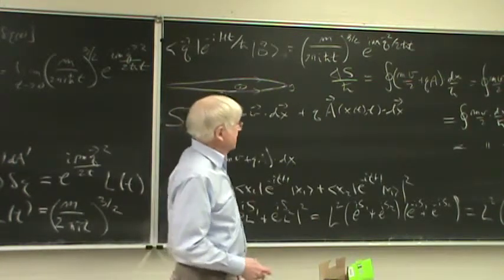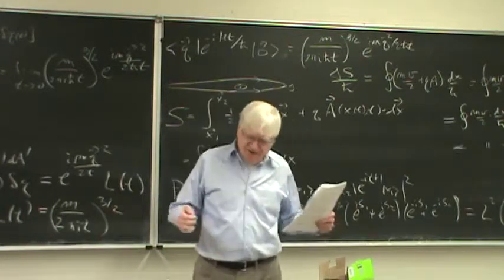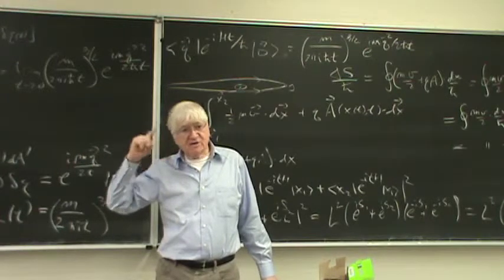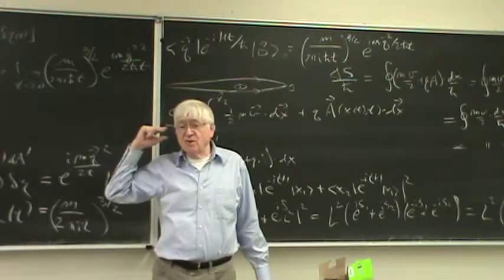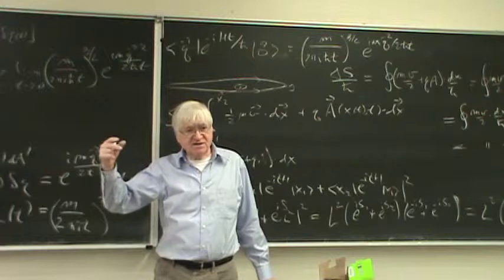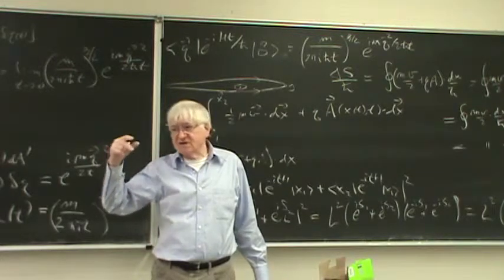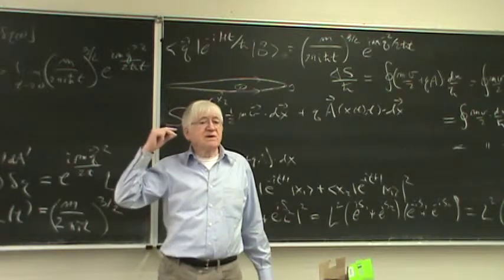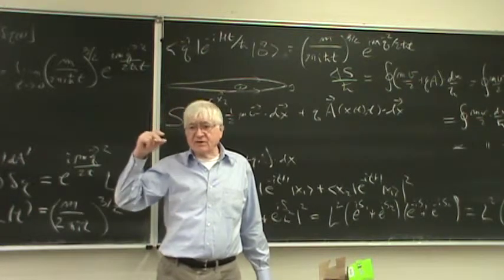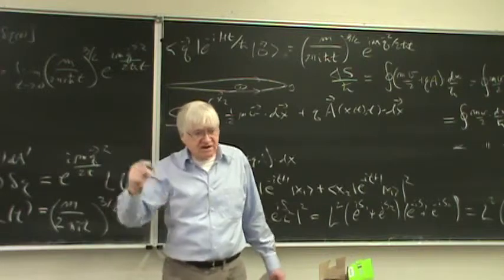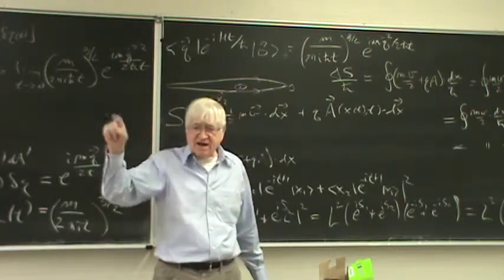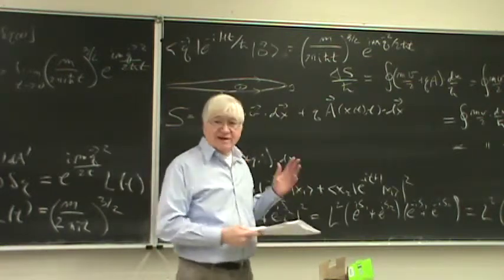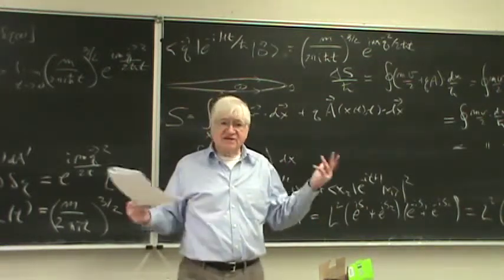Remember we've talked about: to do quantum mechanics we do path integrals like this. To do statistical mechanics, thermodynamics, physics at finite temperature, we do path integrals in imaginary time. In other words, instead of computing e^{−iHt}, we just compute e^{−βH}. So let's do that now for the case of a free particle.